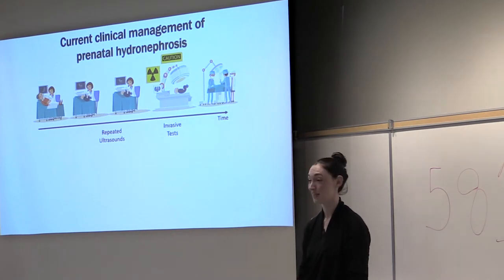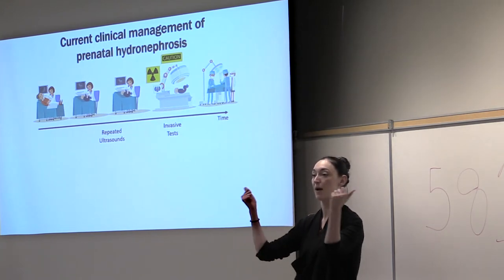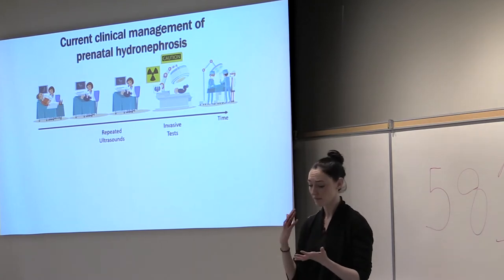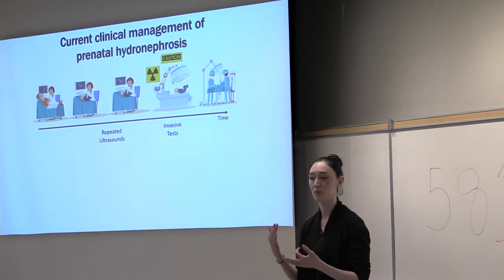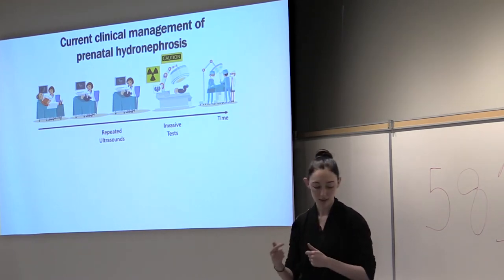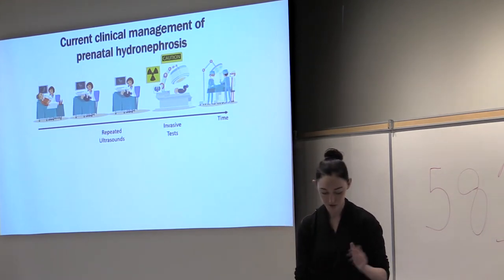They're also going to tend to get invasive tests, like a functional renogram or DMSA, to assess the function of the kidney, whether or not there's reflux. Reflux is when urine from the bladder is being pushed back up into the kidneys. All of these things need to be done repeatedly over time with invasive tests. It's timely, it's uncertain, and everyone's threshold for surgery is a bit different.